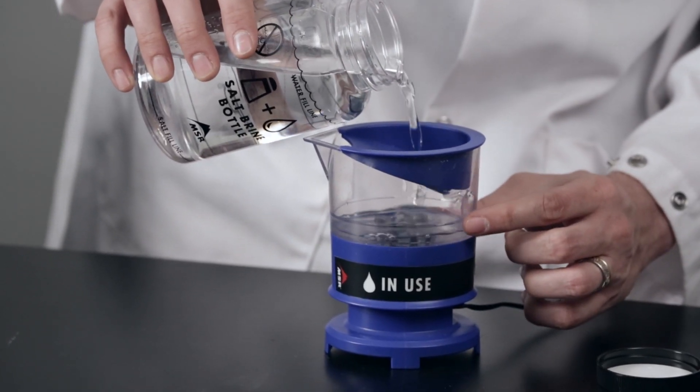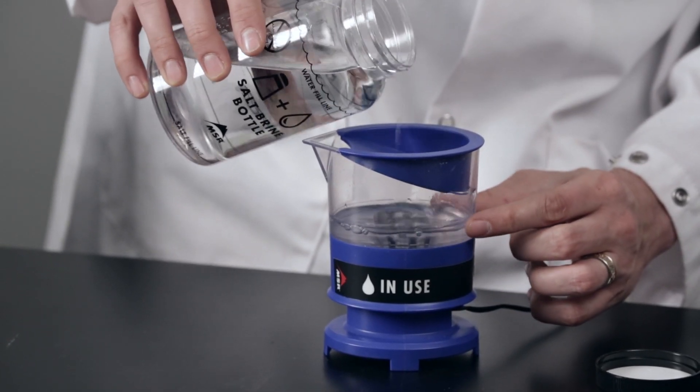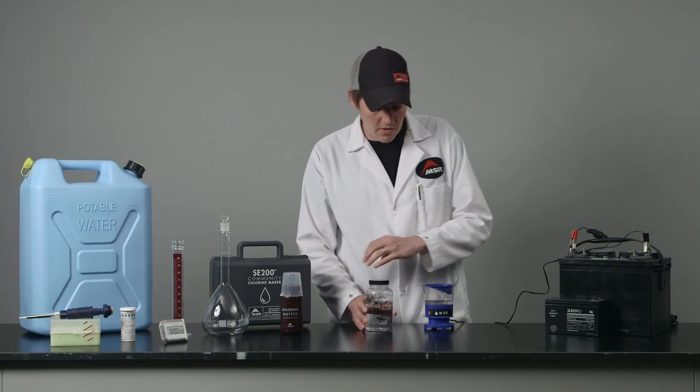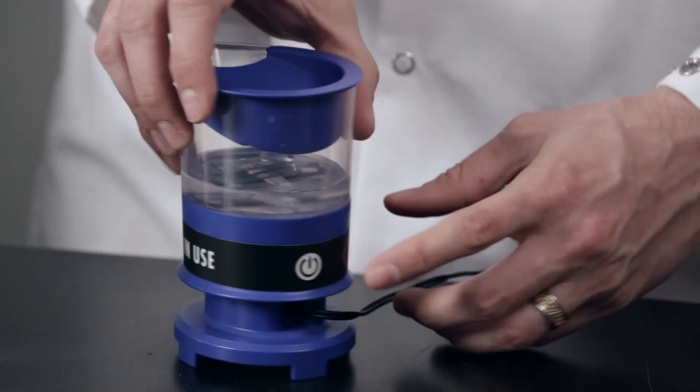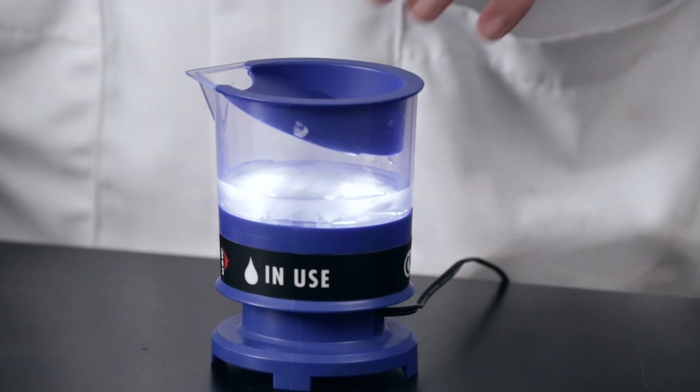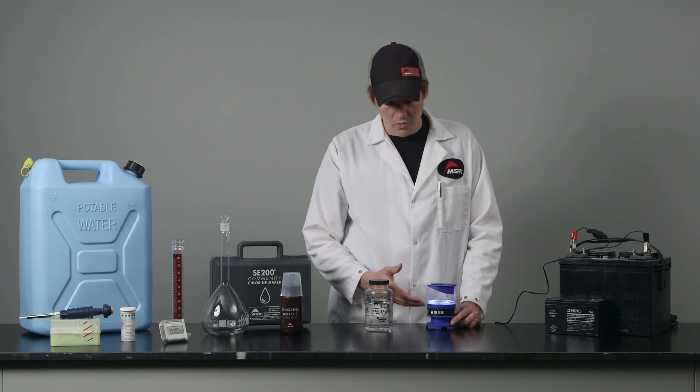Filling to the line on the side of the device. Then I'm going to push the power button once. This will start the electrolysis reaction. The white light indicates that it's working properly.